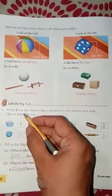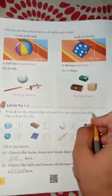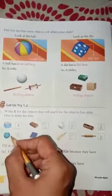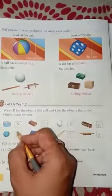Let us try 1.2. Write R for the objects that roll and S for the objects that slide. One is done for you. Jo hai already aapke liye kiya hua is mein. Yeh dekhiye, jiska bhi flat face hai, woh slide hai. Aur yeh idhar dekhenge, curved face hai, toh yeh roll hai. Theek hai, baaki sab aap khud se karenge.